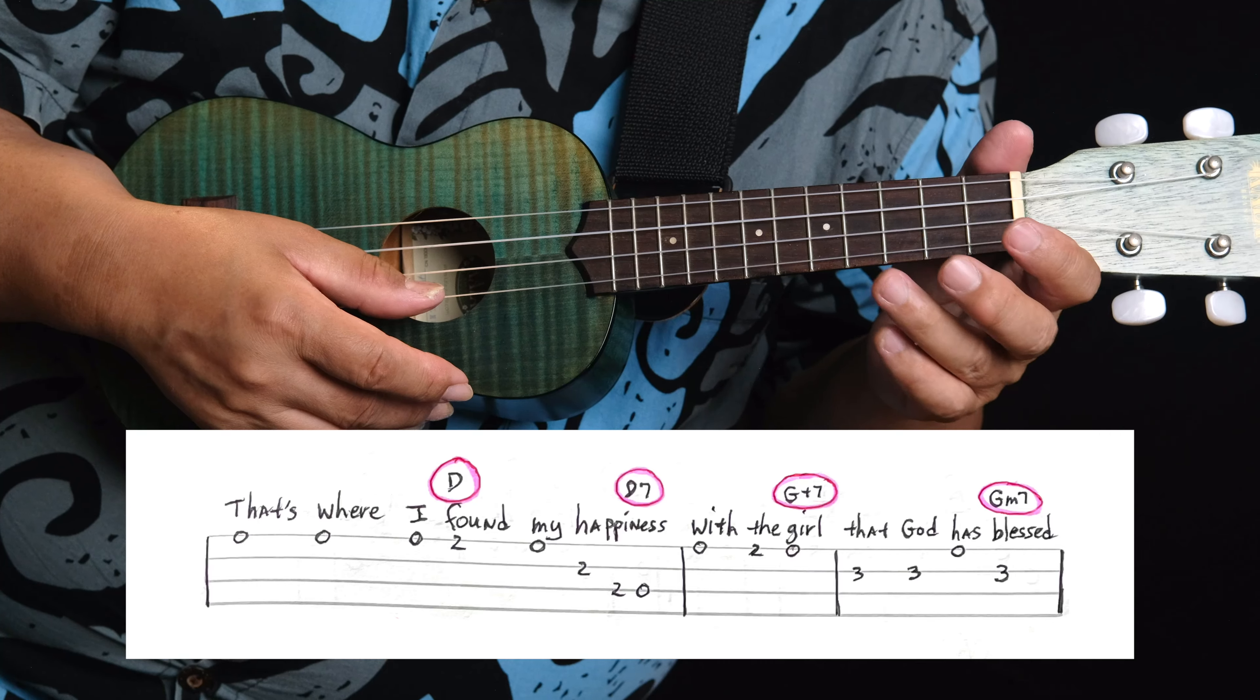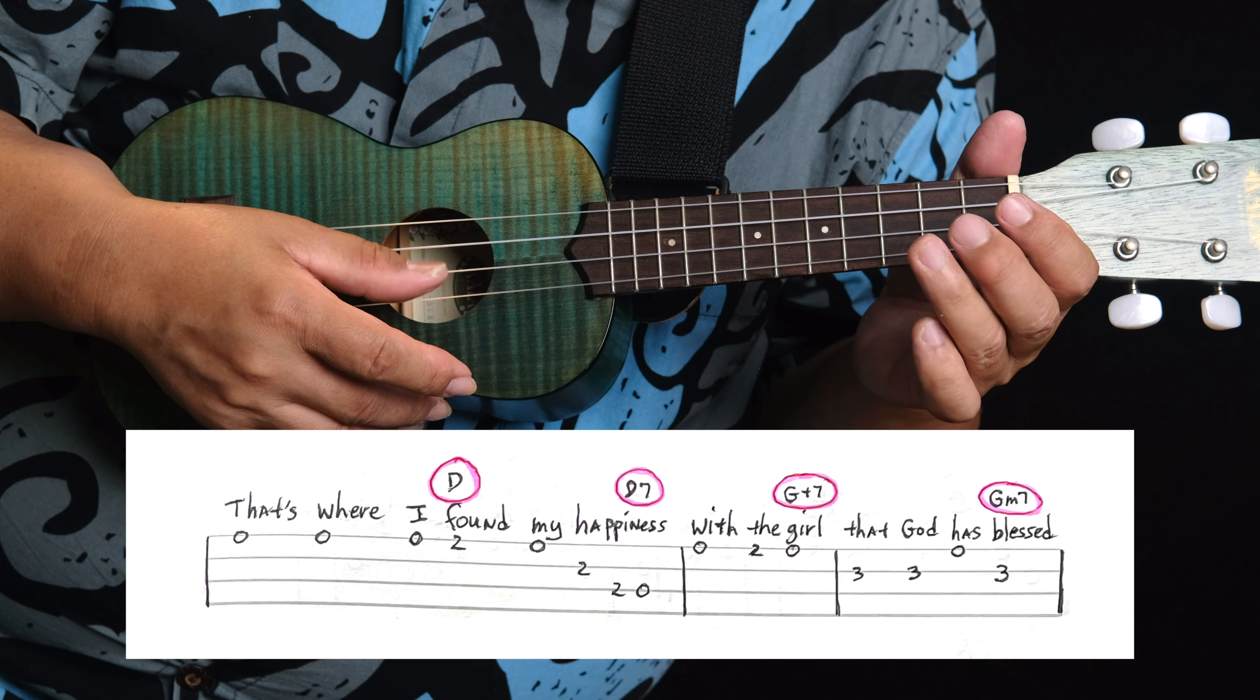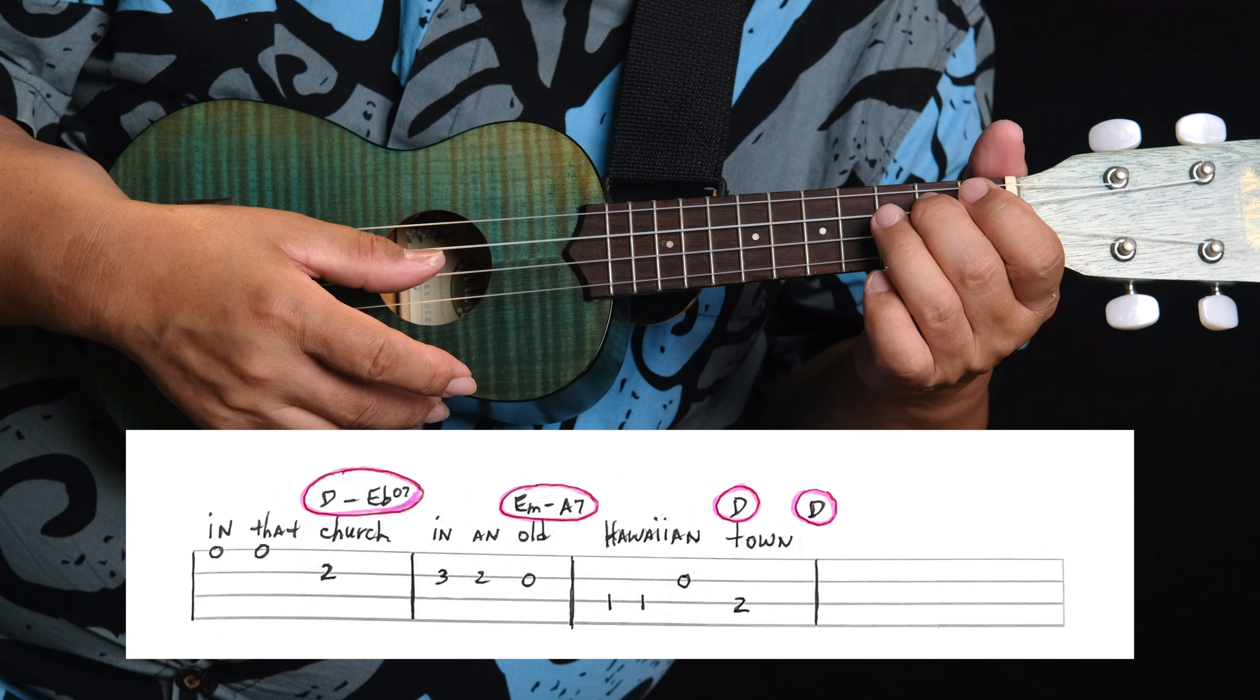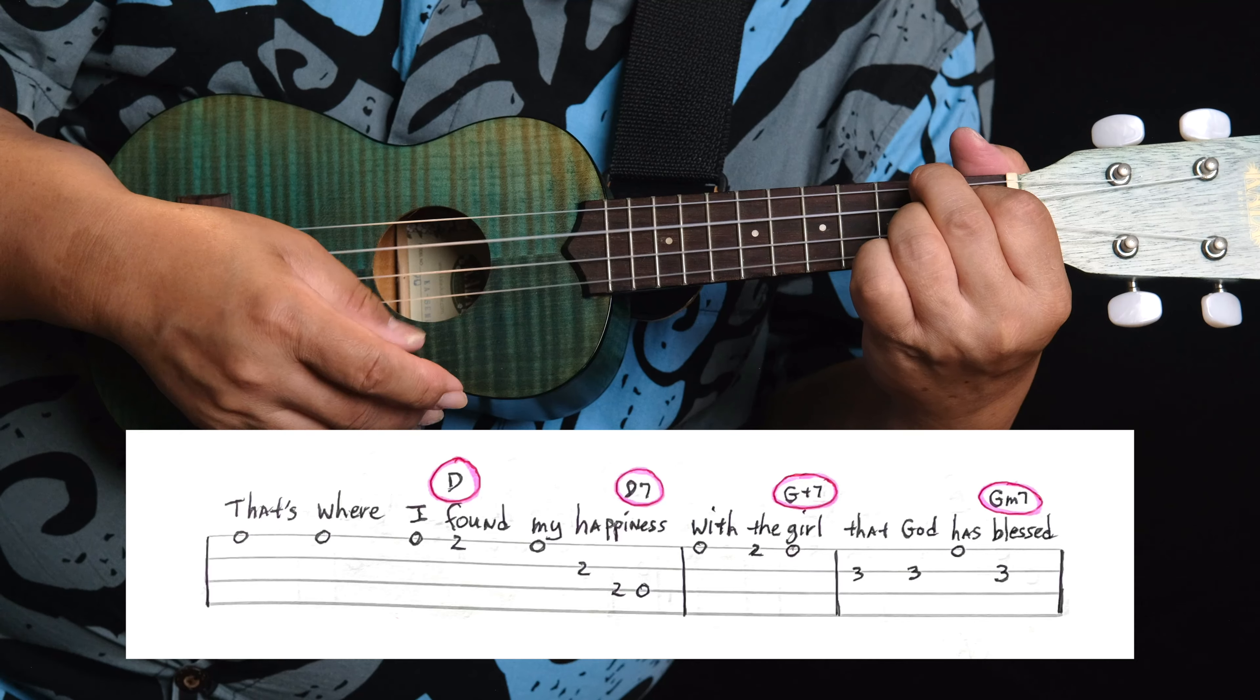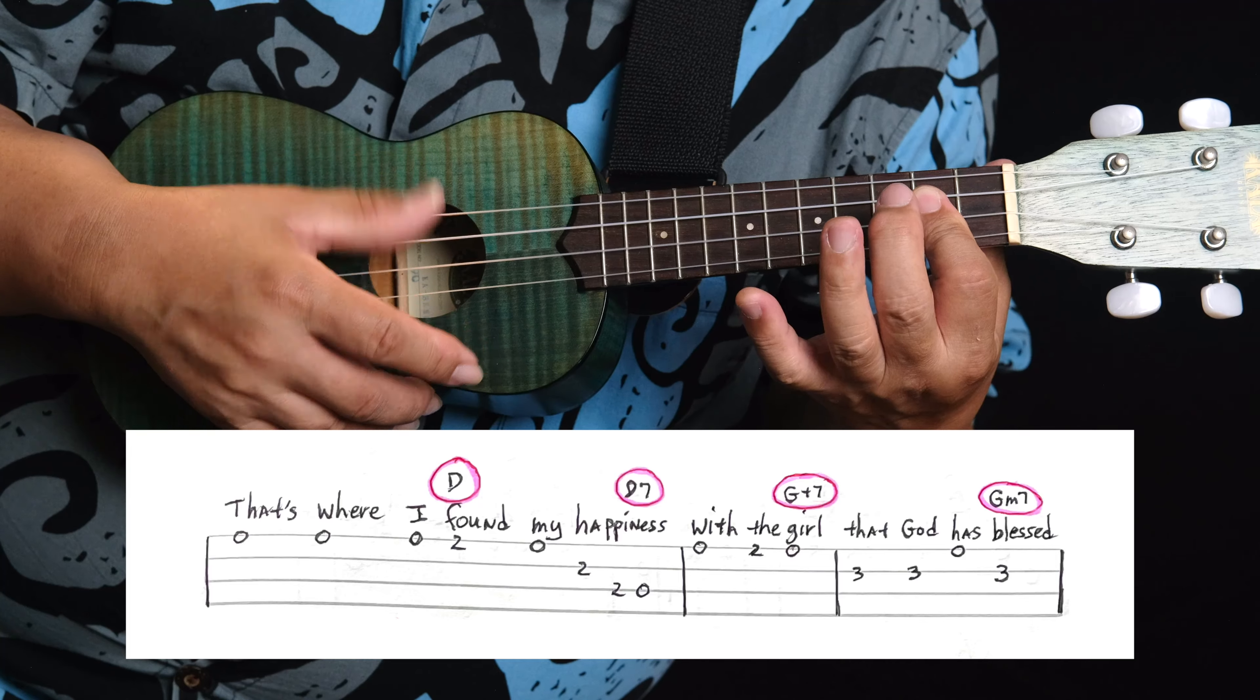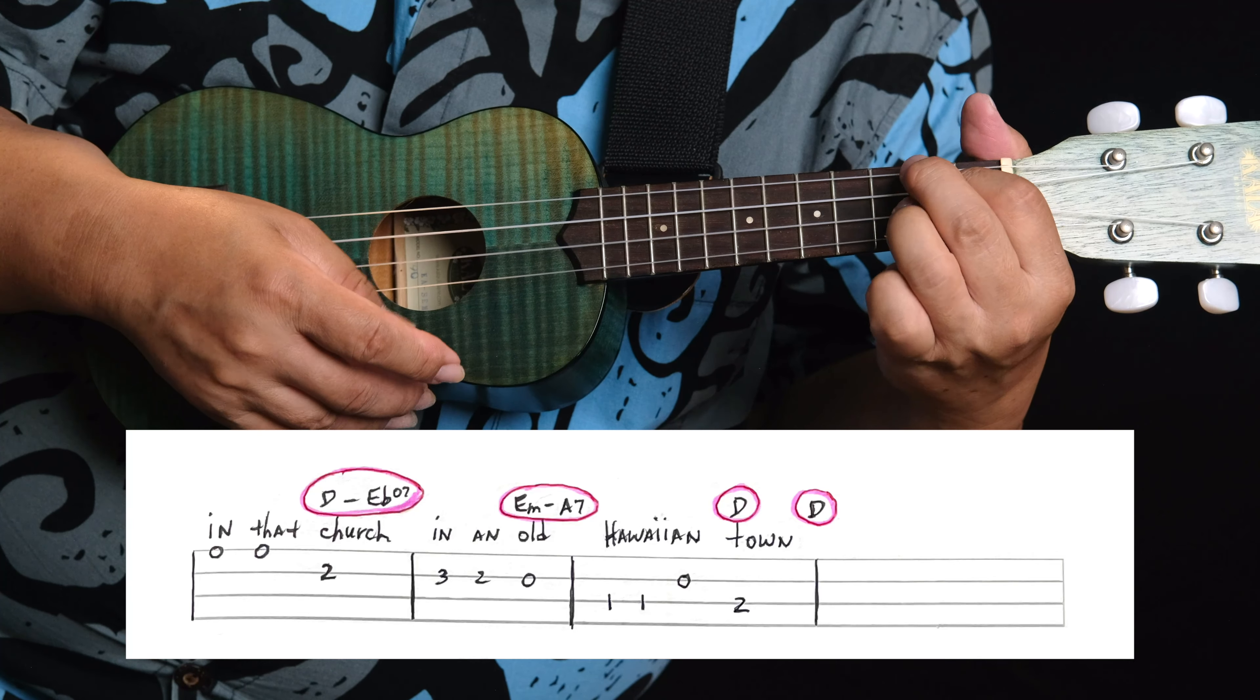Here's the last verse. Here's the last verse with the chords. That's where I found my happiness. With the girl that God has blessed. In that church, in an old Hawaiian town.